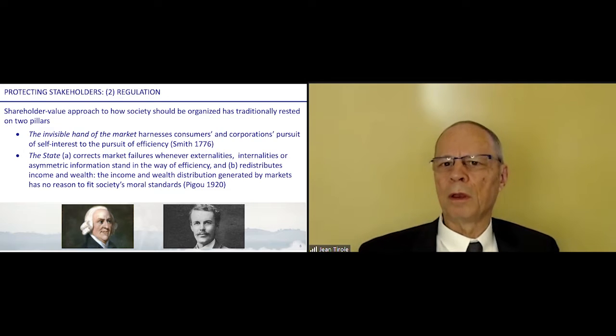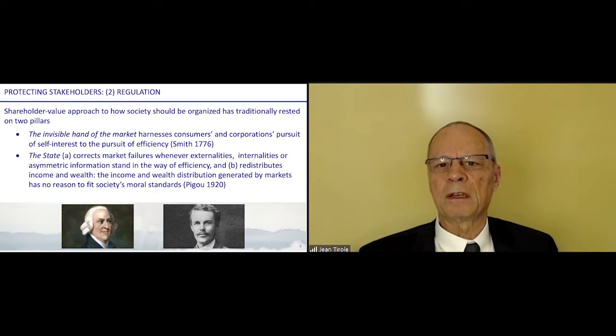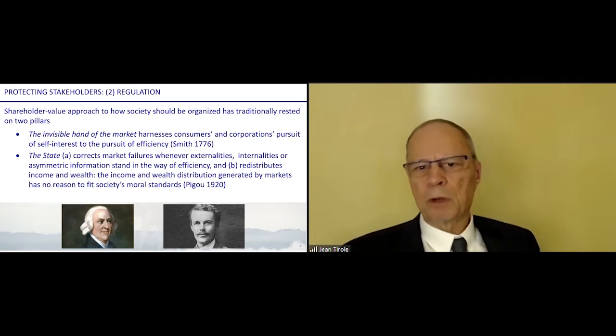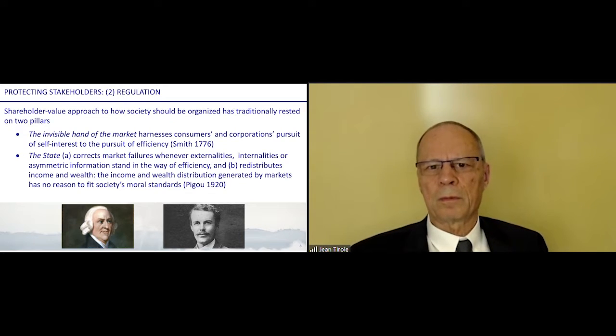At the same time, you will have the state which is going to do two things. The first is to correct market failures, which are due to externalities. For example, when there is pollution, that's a form of externality. You hurt somebody else. Or internalities, and internalities is basically when people fail to stand for their own best interests. For example, they might overconsume drugs or not save enough because they are impatient, they are impulsive. That's one thing. Asymmetric information is another market failure.